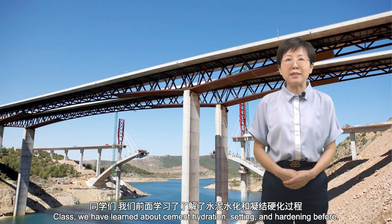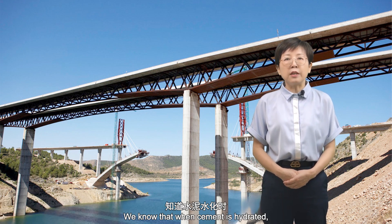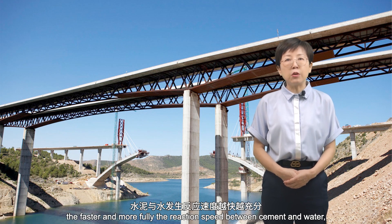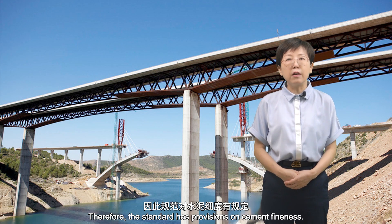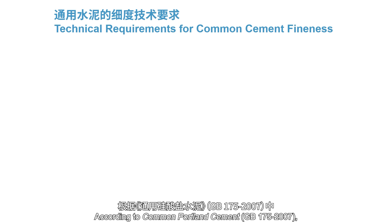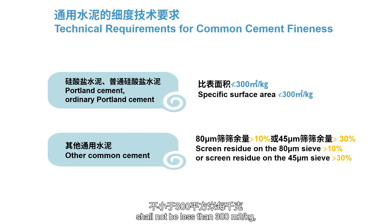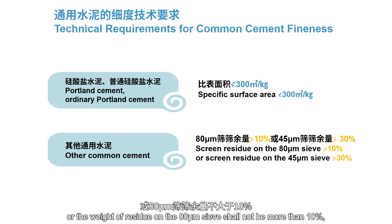We have learned about cement hydration, setting, and hardening before. We know that when cement is hydrated, the larger the surface area of cement grains, the faster and more fully the reaction speed between cement and water, and the higher the early cement strength will be. Therefore, the standard has provisions on cement fineness. According to Common Portland Cement GB175-2007, the specific surface area of Portland cement and ordinary Portland cement shall not be less than 300 square meters per kilogram, or the weight of residue on the 80 micrometer sieve shall not be more than 10 percent, or the weight of residue on the 45 micrometer sieve shall not be more than 30 percent.